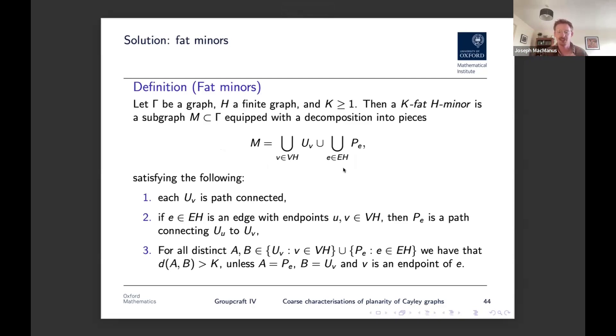And a K fat H minor is some subgraph M, which decomposes into pieces. M is itself an H minor in gamma. But essentially what we have is we have these pieces, the U_V, which are indexed by the vertices of H. You just imagine these as like some vertex spaces. And then you have these P_E, which are the paths that connect the vertex spaces together. And they form like a big copy of H. And the K comes in by saying that if these pieces are not adjacent in the graph, they need to be really far apart in gamma.